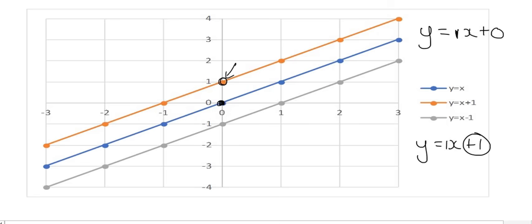And then the gray graph is y is equal to x minus 1, so its gradient is also 1, but it goes through the y-axis at minus 1, and there we can see that over there. Notice that all three lines are parallel, or they are like railway lines, and this is a phenomenon that takes place when lines have the same gradient. If they have the same gradient, then they are parallel.